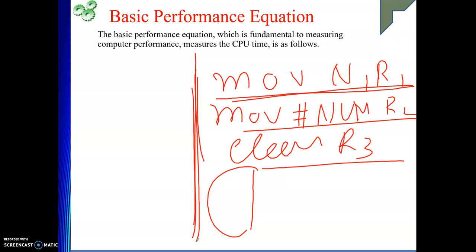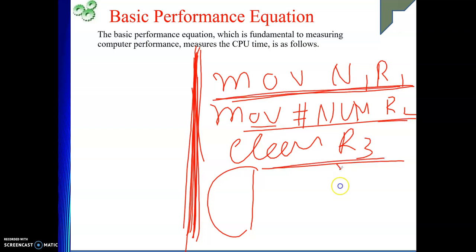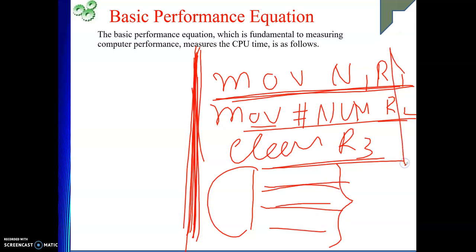The time taken to complete the execution of this program is the CPU time we are computing in our performance measurement. The point is, whenever we have written some instructions, some instructions will be executed repeatedly in the loop. So we need not only see the instructions written, but how many times they will be executed. So in my program, how many total instructions are there that are actually executed — that is point number one.